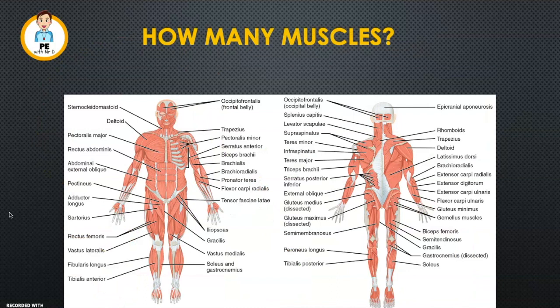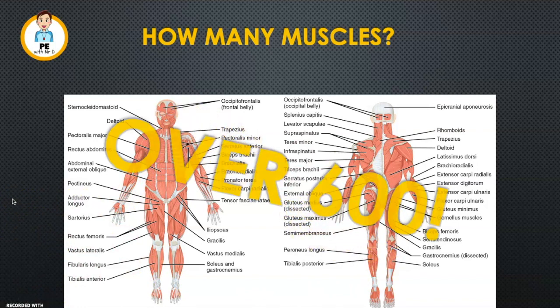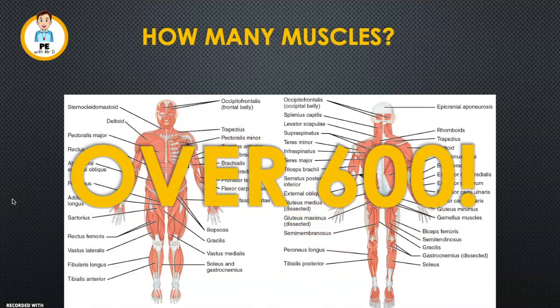So how many muscles are there in the human body? Here's just a quick glimpse of a few of the major muscles, but in fact there are over 600 muscles. But don't worry, we're not going to go through them all today — we might leave that for the next video. Stay tuned for that.